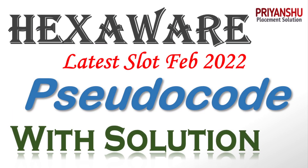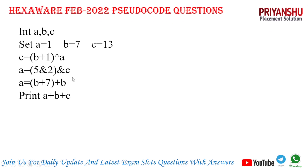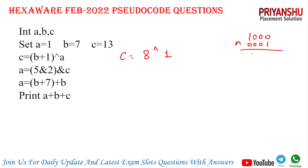Let's discuss one by one. The first pseudocode: values of a, b, c are given as 1, 7, and 13. Let's solve it. For c: c = b XOR a, which is 8 XOR 1. Eight in binary is 1000 and one is 0001. Performing XOR: different gives 1, same gives 0, so we get 9.